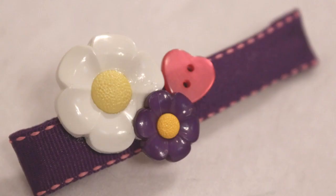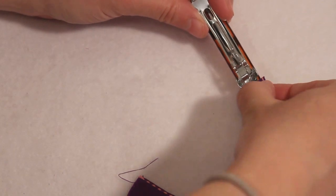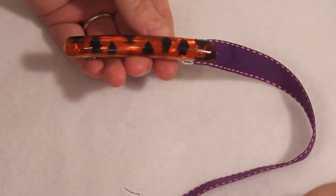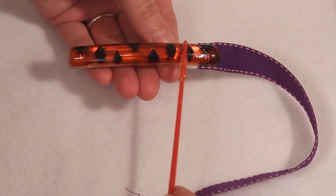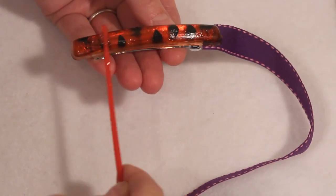Now onto the second style inspired by the movie Tangled. For this style I used a larger barrette and some ribbon that reminded me of Rapunzel's dress. I used the same glue as before to adhere the ribbon into place covering the entire top of the barrette and wrapping around the edges.